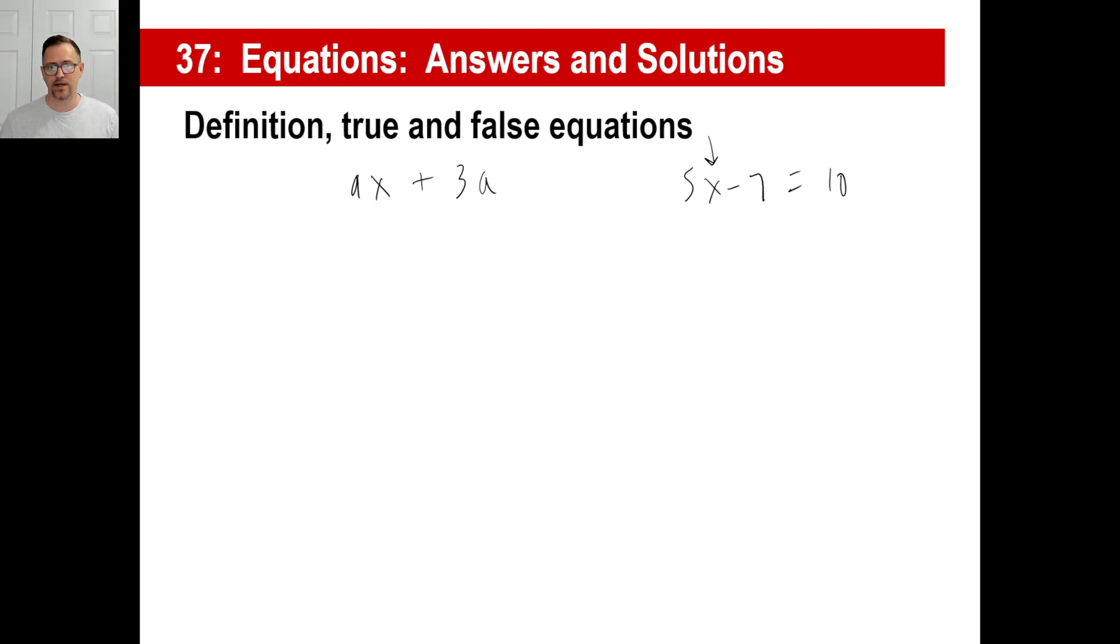A true equation would be something like 7 plus 4 equals 11. True equation. Equal sign, and it's true. Now, if you said 7 minus 4 equals 11, that's an equation, but it's a false equation. So everybody knows 7 minus 4 is 3.